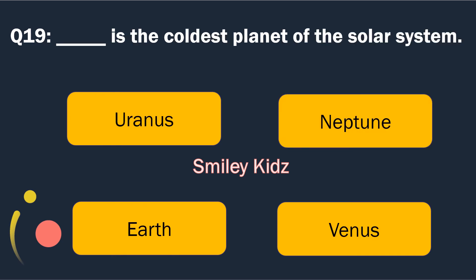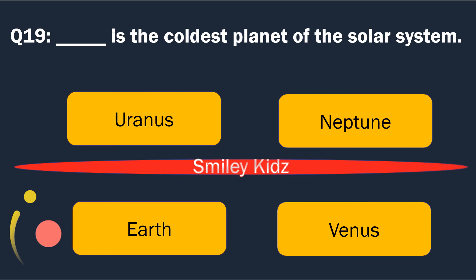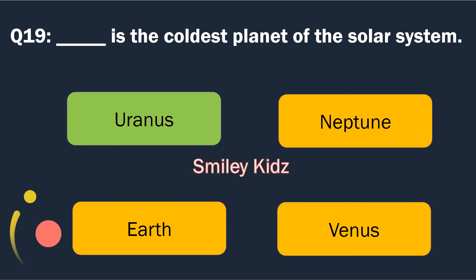Question number 19. Blank is the coldest planet of the solar system. Options are: Uranus, Neptune, Earth and Venus. The right answer is Uranus. Uranus is the coldest planet of the solar system.